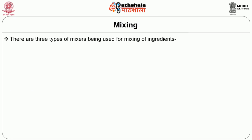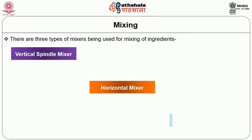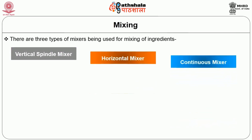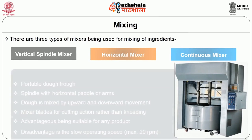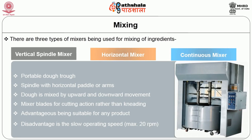There are three types of mixers used for the mixing of ingredients: vertical spindle mixer, horizontal mixer, and continuous mixer. The first is the vertical spindle mixer. It contains a portable dough drawer with a spindle with horizontal paddles or arms. The dough is mixed by upward and downward movement. The mixer blades perform a cutting action rather than kneading. These mixers are advantageous due to their suitability for any product; however, the disadvantage lies in the slow operating speed.